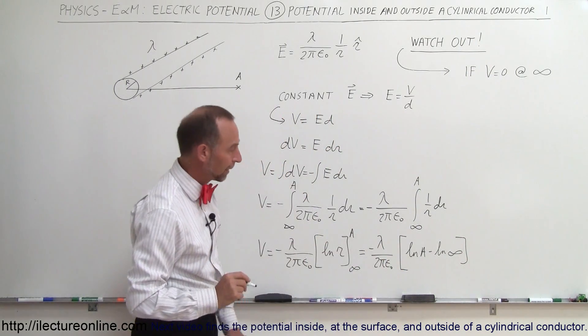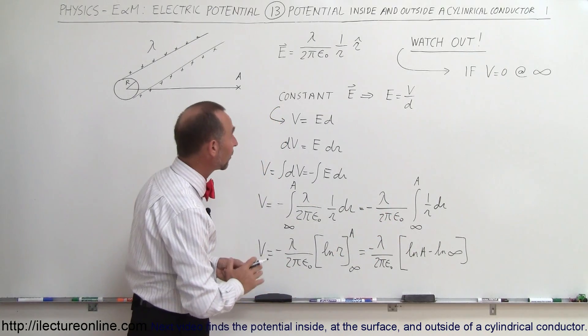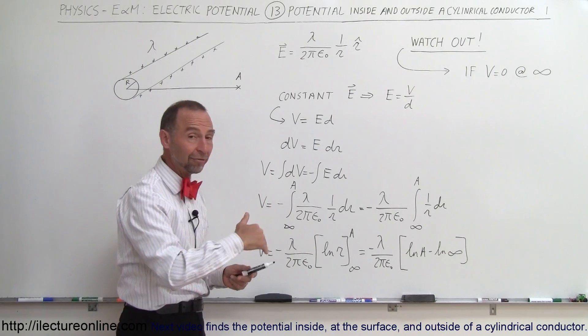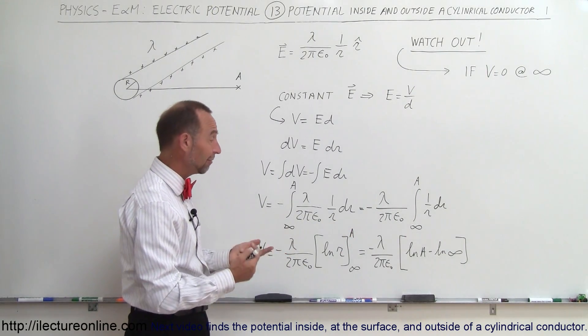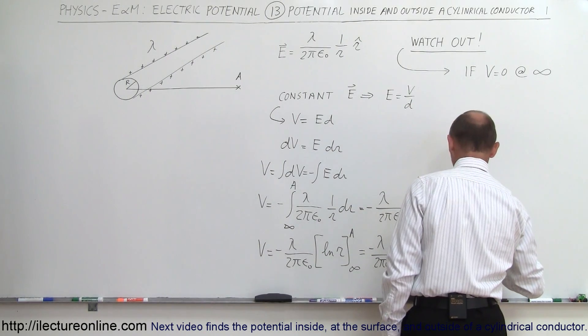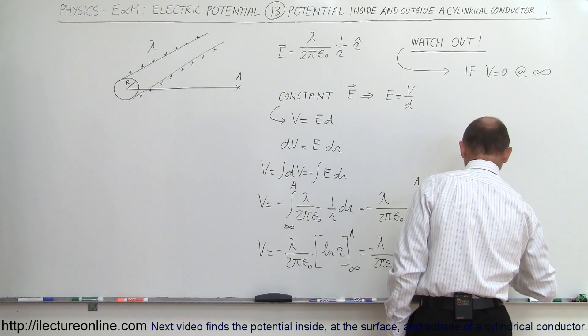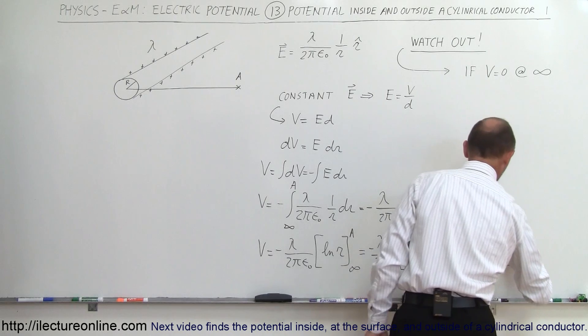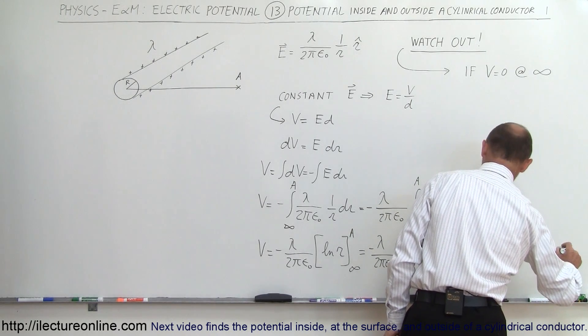Now, here's the problem. Natural log of infinity doesn't disappear. When we integrate something that's 1 over r squared, we get r in the denominator, then we plug in infinity, it goes to zero, but in this case, the natural log of infinity is still infinity. So what that means, now when I apply the negative sign, this is equal to λ divided by 2π epsilon nought times, when I flip these around, the natural log of infinity minus the natural log of A.